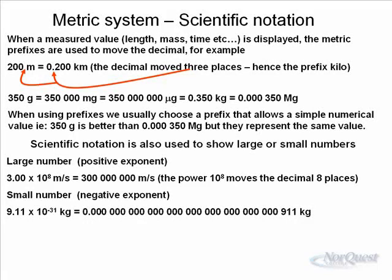And a small number, such as the mass of an electron, 9.11 times ten to the minus 31 kilograms, you can see that that negative 31 has actually moved the decimal place 31 places to the left, making a very small, small number.